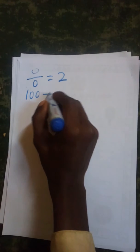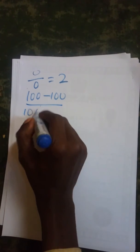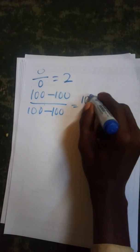that 100 minus 100 equals 0 over 100 minus 100, which we can equate to 10 squared